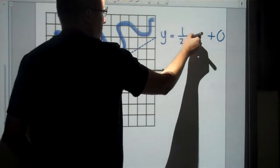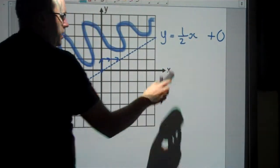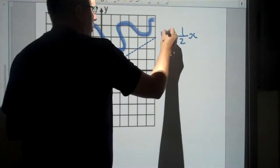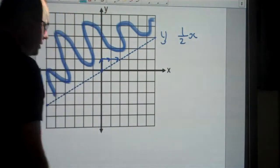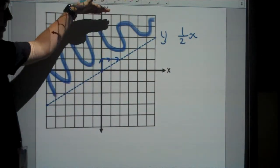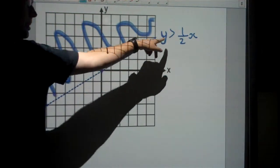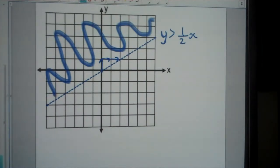Let's get rid of the equals sign and the plus 0. This one's shaded above the line, so I need greater than. Since this is not a solid line, I shouldn't have an equals sign on my inequality. So y is greater than 1/2x.